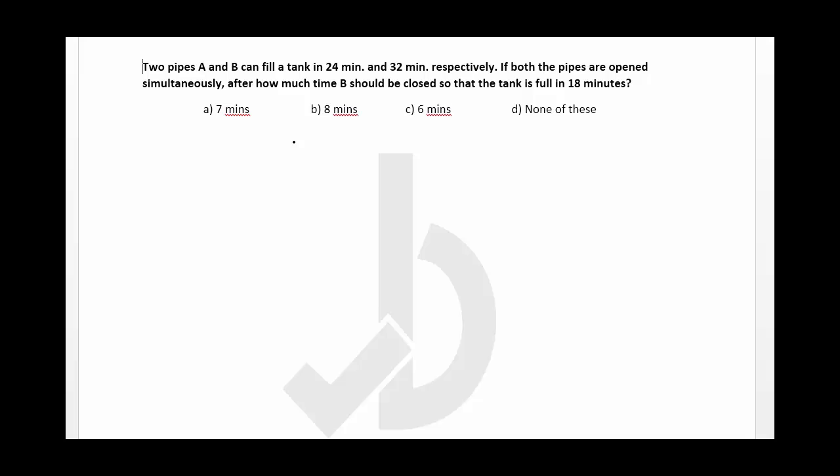One which is based on pipes and cisterns and the other is time and work. In this question, two pipes A and B can fill the tank in 24 minutes and 32 minutes respectively. If both the pipes are opened simultaneously, after how much time the tap B must be closed so that the tank is filled in 18 minutes?